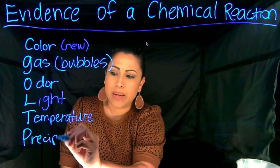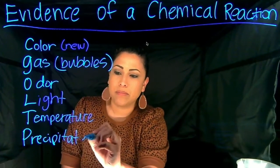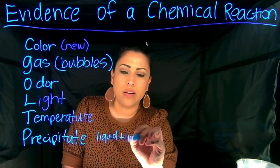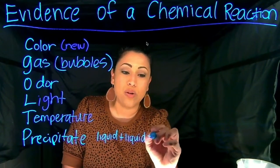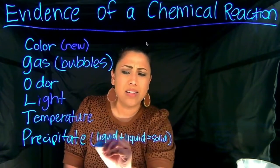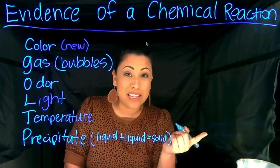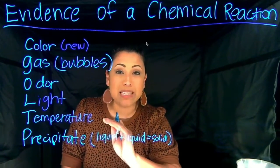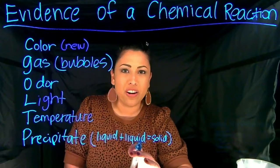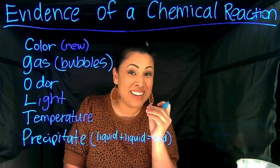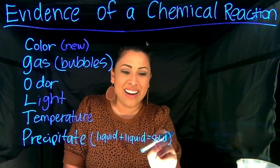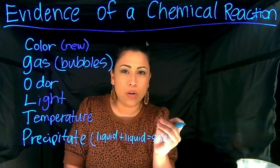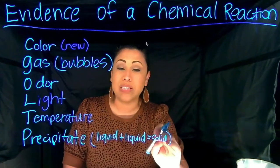The next one is going to be a precipitate. This is when you have a liquid plus a liquid and you get a solid. You can mix milk with vinegar and then you start getting that chunky milk — that's a solid, right? That is a chemical reaction because you can't get that milk back to the way it was. It's now spoiled milk.